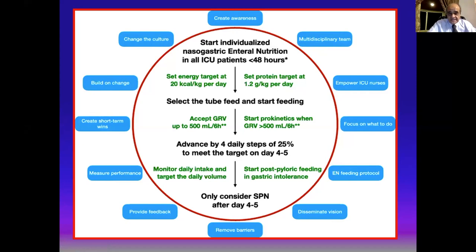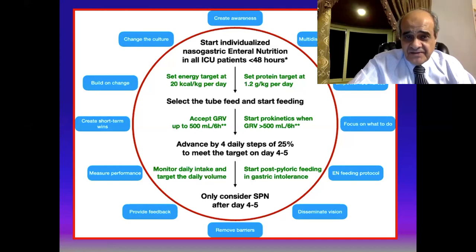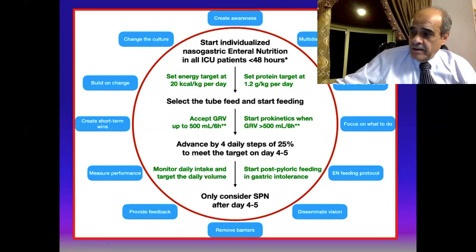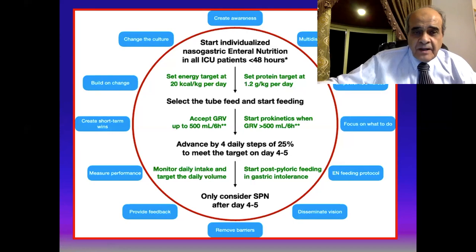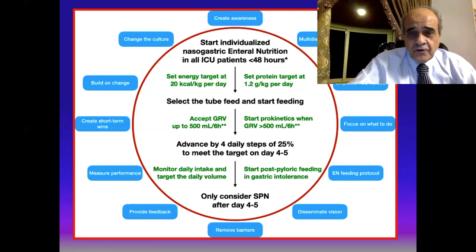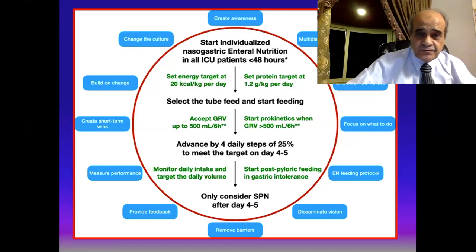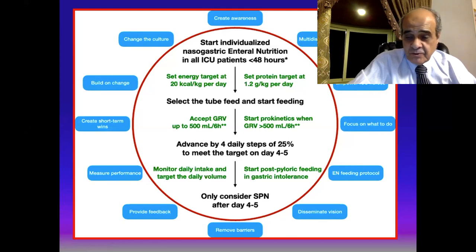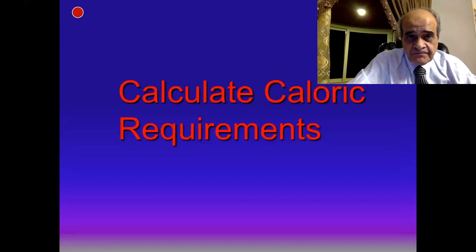Select the tube feed formula, monitor gastric residual volume, and use a limit of 500 mL. Advance nutrition by daily steps of 25% to meet the target by day four or five. Consider parenteral nutrition only in cases of impaired enteral nutrition or if the patient is severely malnourished and needs more nutritional support.